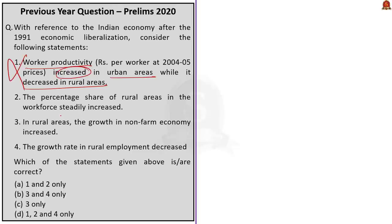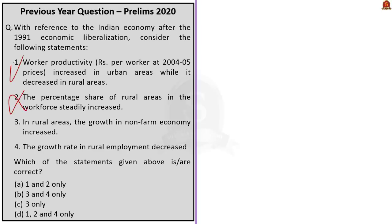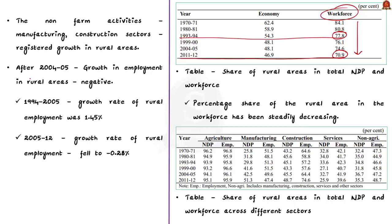Consider the second statement: the percentage share of rural areas in the workforce steadily increased. From the reference table, the percentage share of rural areas in the workforce has been steadily decreasing — from around 78% in 1993-94 to nearly 70% in 2011-12. Hence the second statement is incorrect. The contribution of rural areas in different sectors of non-farm economy revealed large variations and interesting patterns.